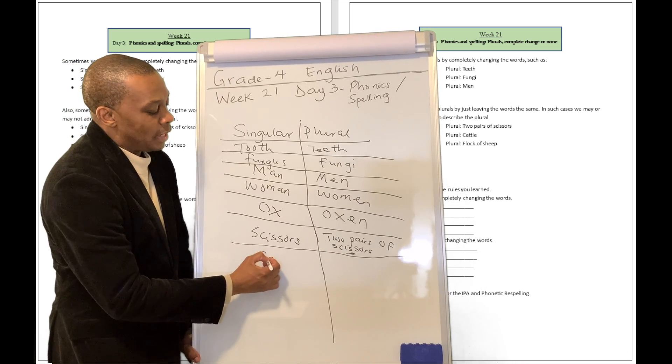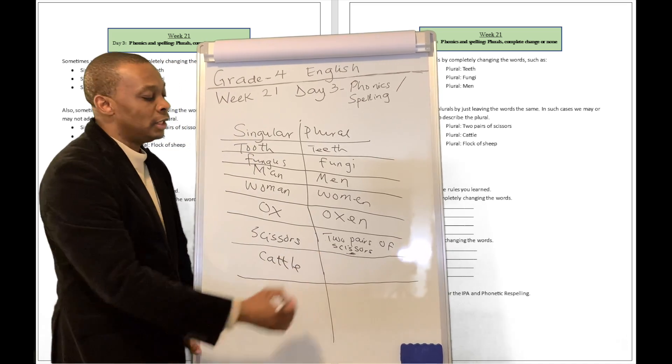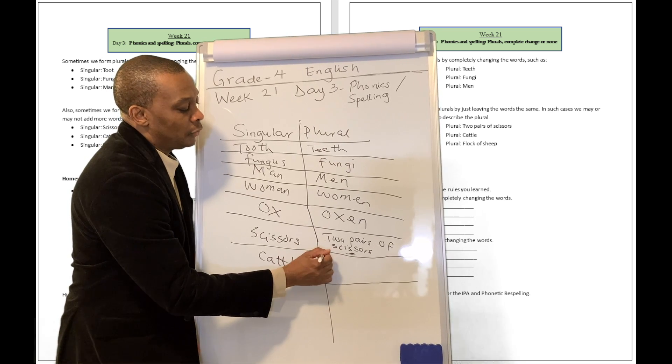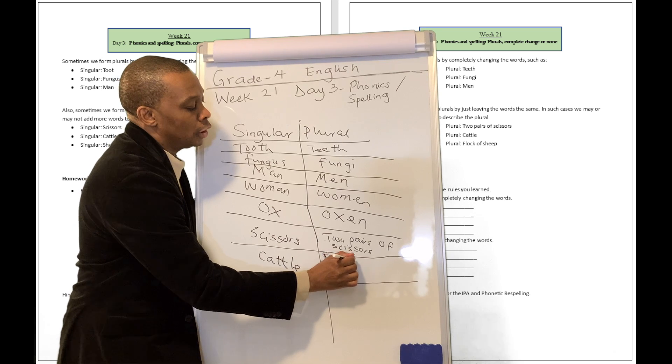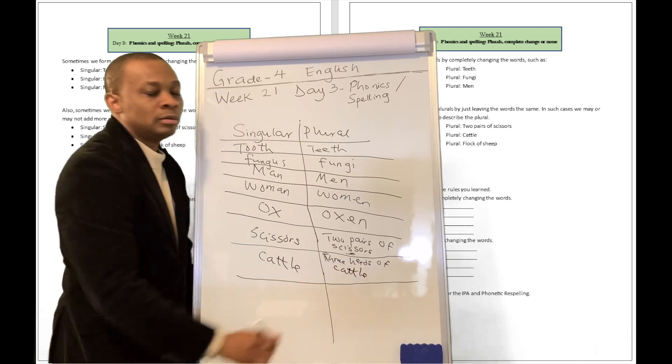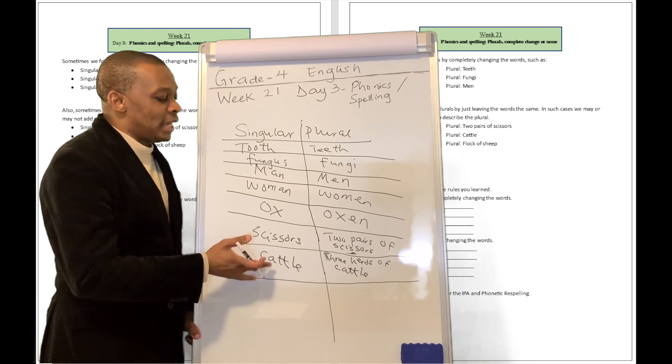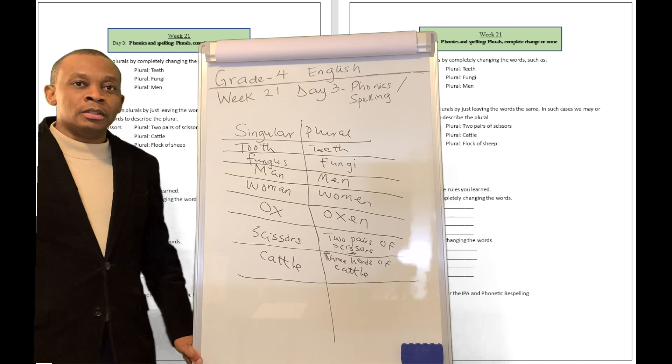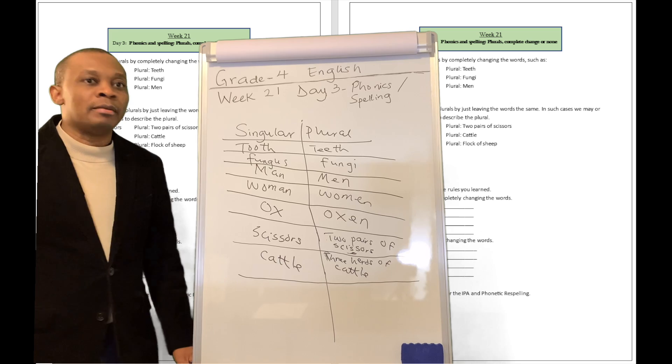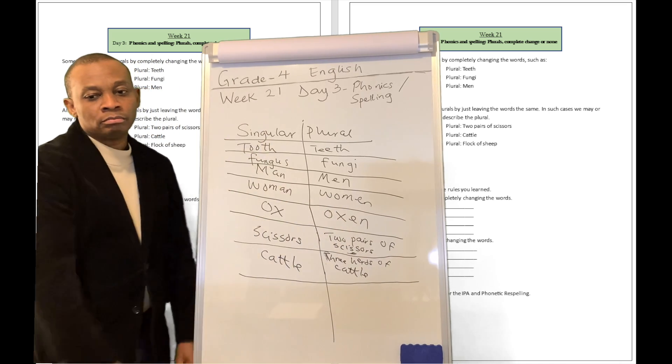What about cattle? Well, cattle is going to be cattle as well as a plural, but you can say three herds of cattle. You don't say cattles. It's cattle. You can just call it cattle all together. I can see some cattle coming over to the yard or something like that. But if you really want to specify counts for those kind of things, you say three herds of cattle.